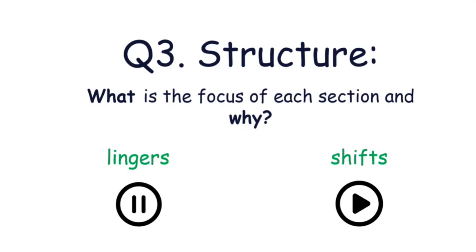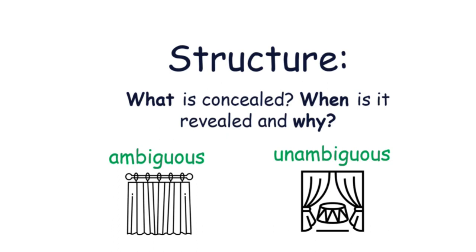Question three, looking at structure. The main aim of question three is to work out the focus in each section and why that is the focus. These are key words you can use: 'the writer shifts the focus to this' or 'the focus then shifts to this' or 'the writer lingers on this topic because.' Also, what has been concealed and revealed: 'the writer conceals this because' and then 'the writer reveals this because.'